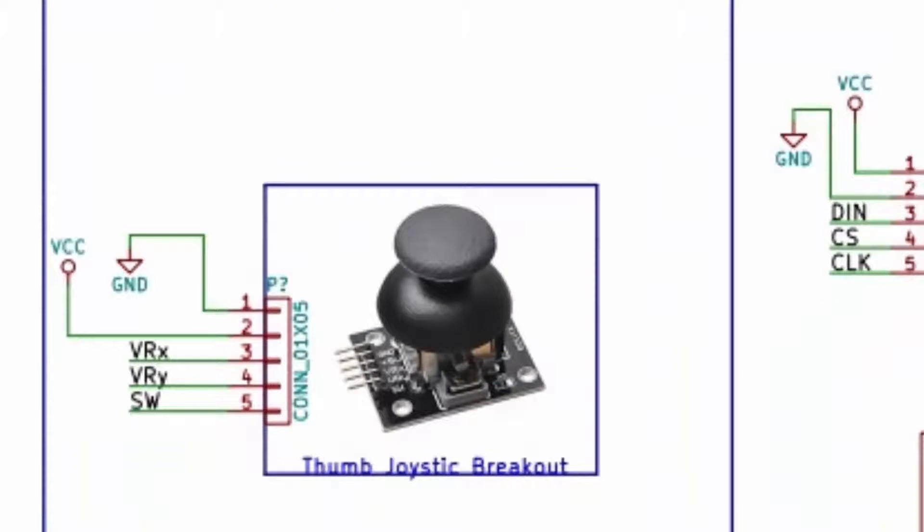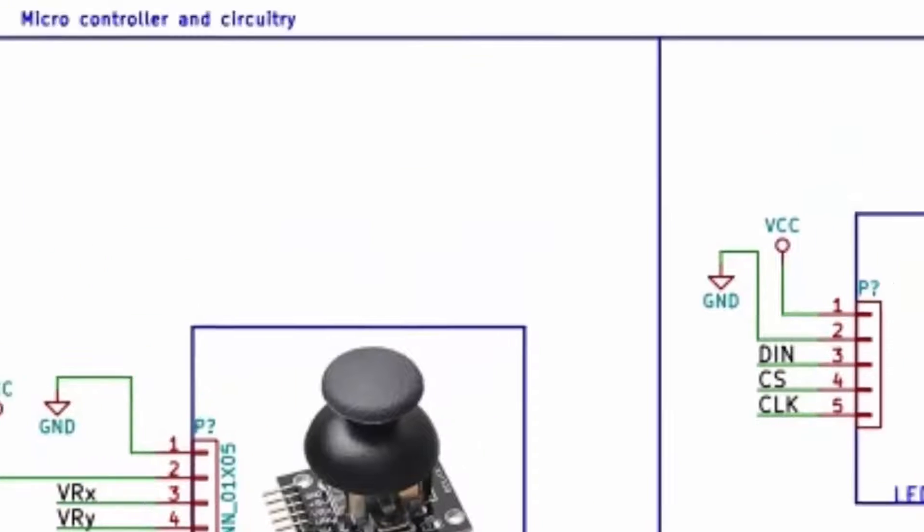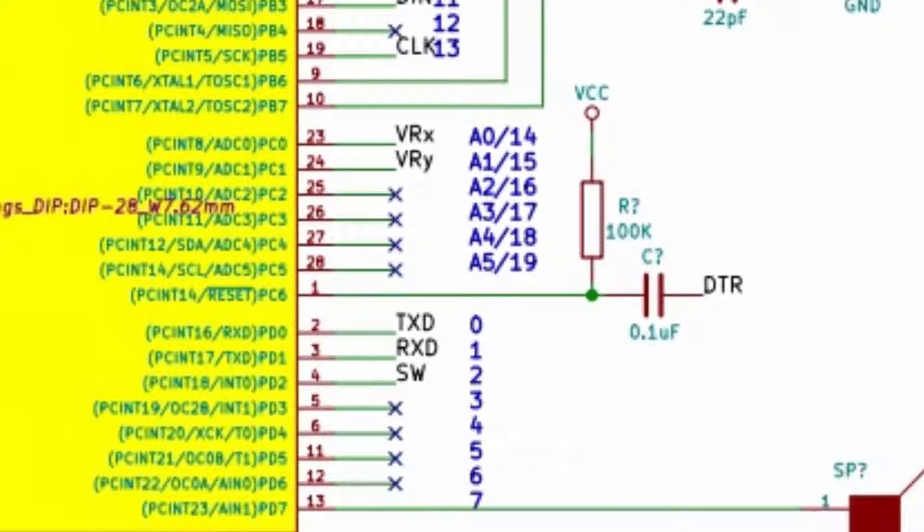We will be using an analog joystick with a select switch as the input device for the gaming console. The joystick needs three pins on Arduino: A0, A1 and pin 2.